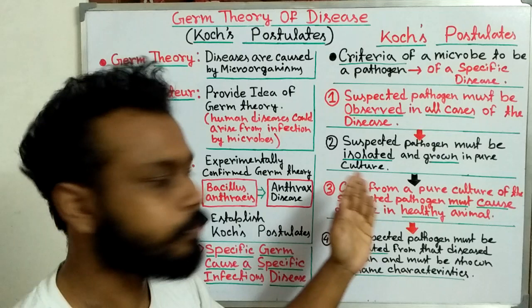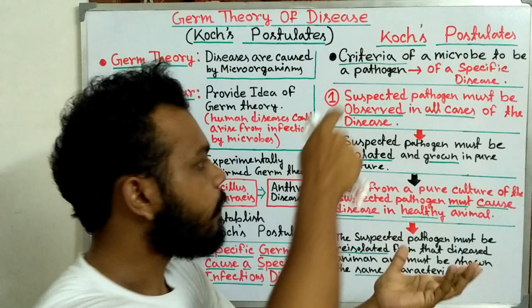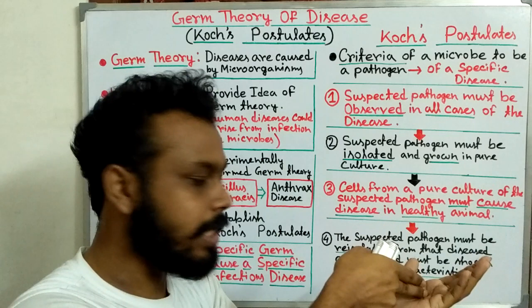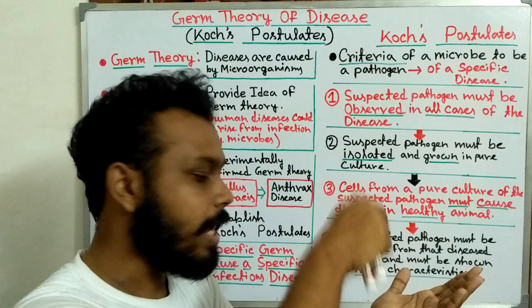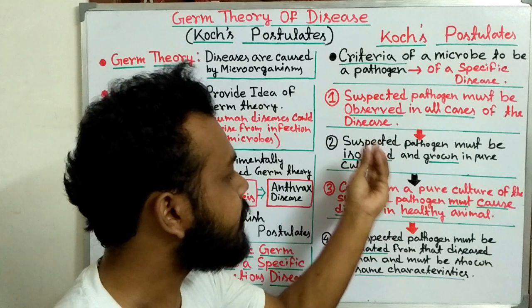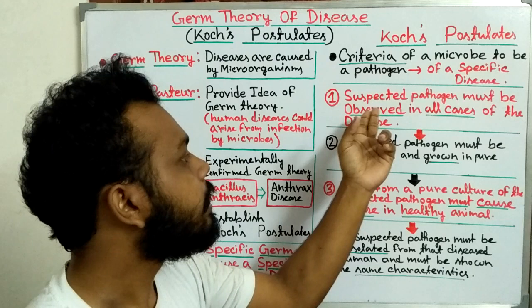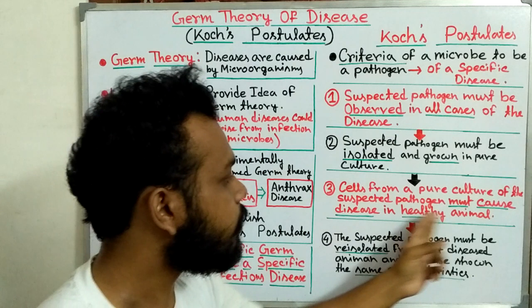The third criterion is: the cells of the pure culture of the suspected pathogen must cause disease in healthy animals. If we inject healthy animals with the pure culture cells, those healthy animals must show the same symptoms as the diseased animal. For anthrax, injecting Bacillus anthracis into healthy animals must produce the same anthrax symptoms.